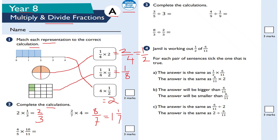Whenever we multiply a fraction with an integer, we multiply the integer by the numerator and keep the denominator fixed. This next one, I do 4 times 10, which is 40, and then 5 times 11, which is 55. I can simplify this by dividing top and bottom by 5, so I get the answer of 8 elevenths.